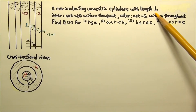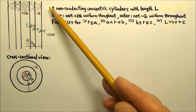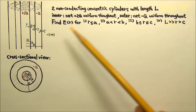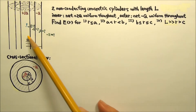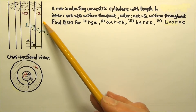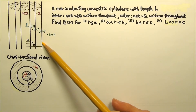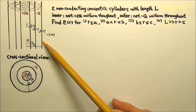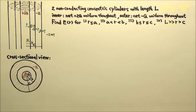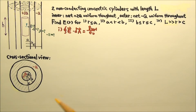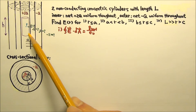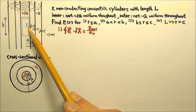Although the cylinders do not have infinite length, we can still approximate the scenario as having cylindrical symmetry because L is much, much greater than the radial distance, and we are only looking for the electric field near the midsection of the cylinders. So we do not have to be concerned with edge effects near the ends. With cylindrical symmetry, we can use Gauss's law.